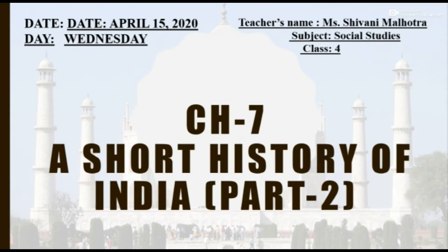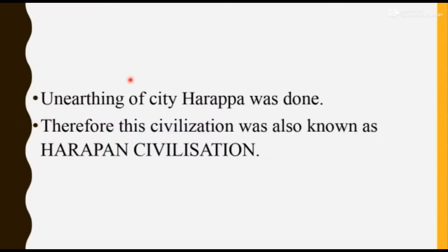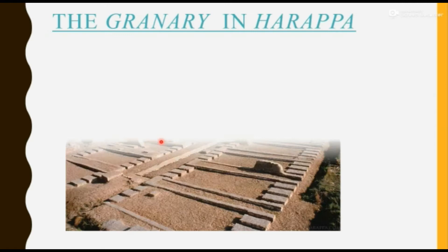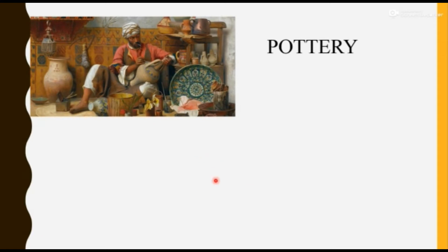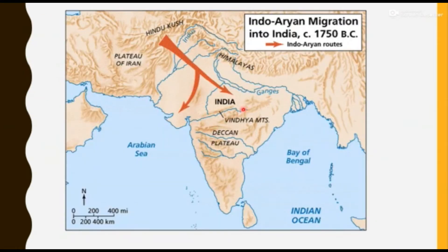A Short History of India. We already did Part One of this chapter, so let's quickly recap. In Part One we discussed the Indus Valley Civilization — the unearthing of the city of Harappa, which is why the civilization also came to be known as the Harappan civilization. We also saw the Great Bath of Mohenjo-daro, used for water-related rituals, and the granary in Harappa where food crops were stored. Archaeologists also found pottery and seals.